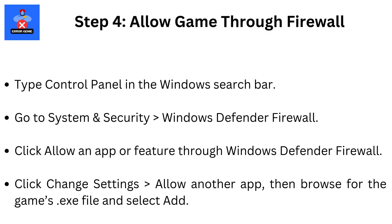Step 4: Allow the game through Firewall. Type Control Panel in the Windows search bar. Go to System and Security, then Windows Defender Firewall. Click Allow an App or Feature Through Windows Defender Firewall. Click Change Settings, then Allow Another App, then browse for the game's .exe file and select Add.